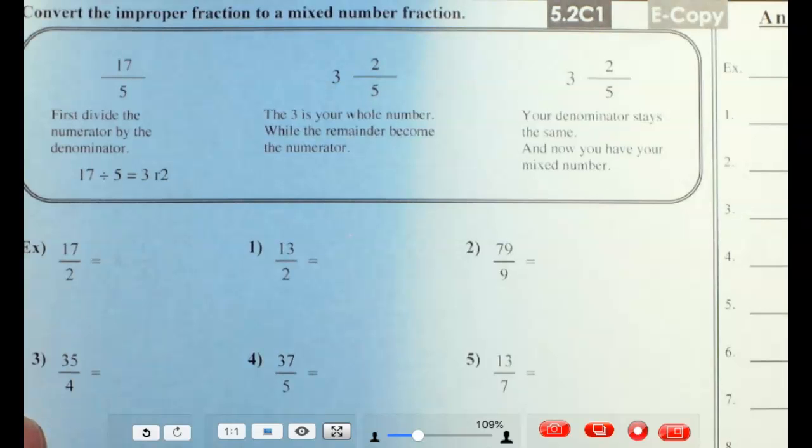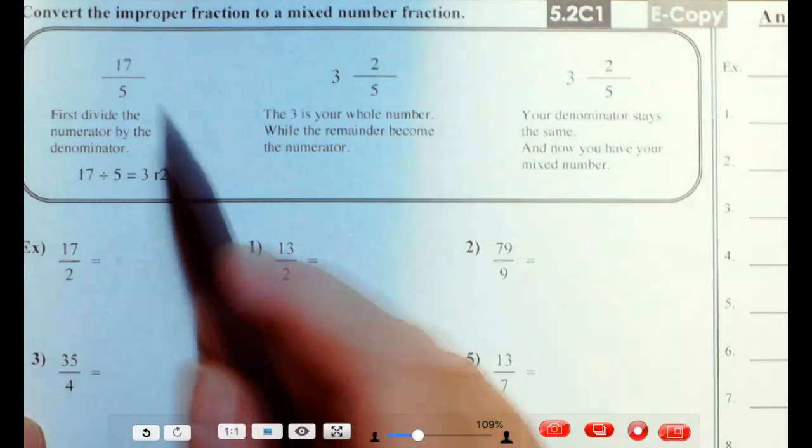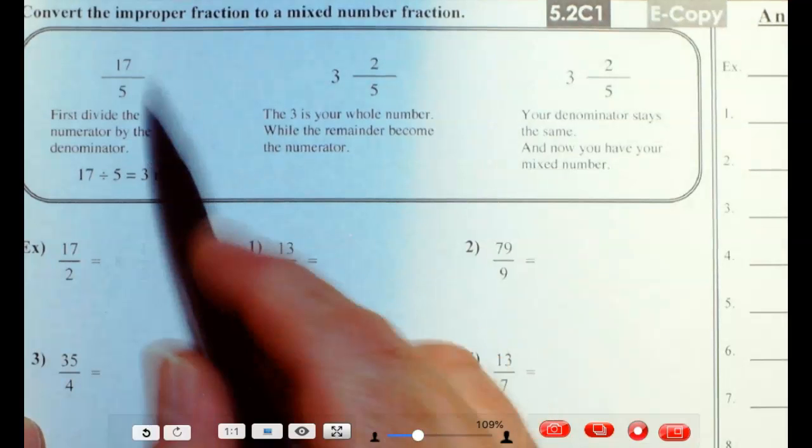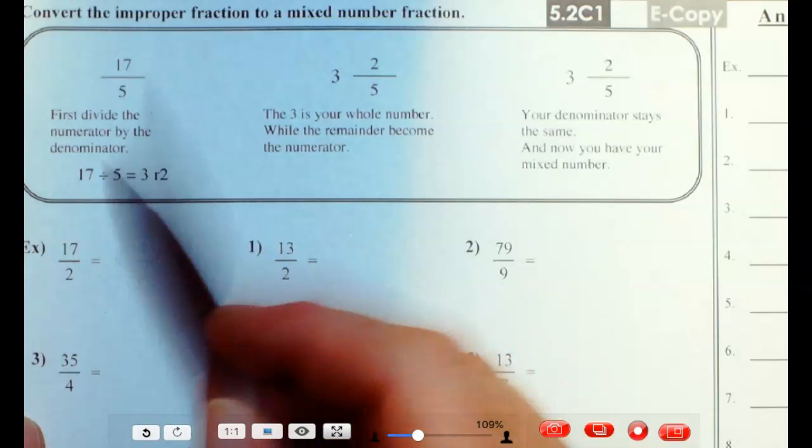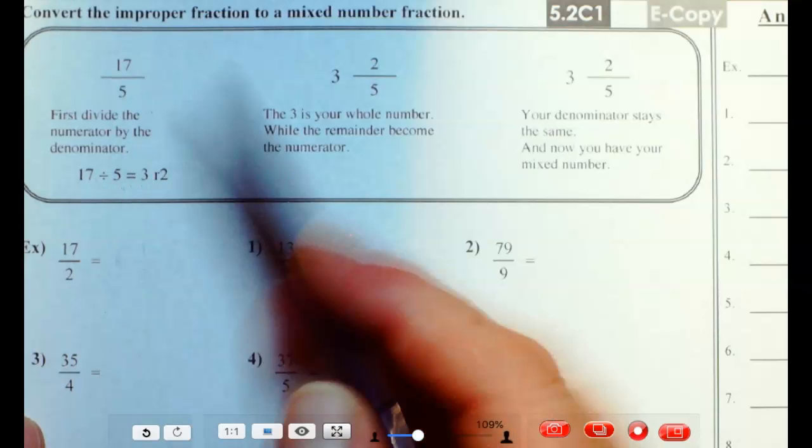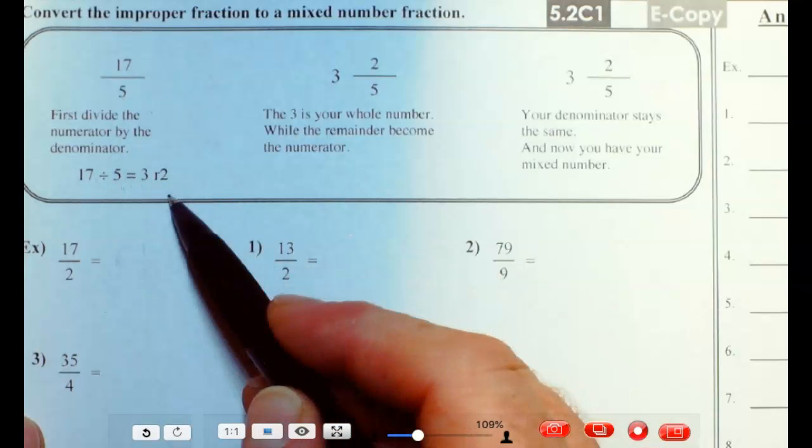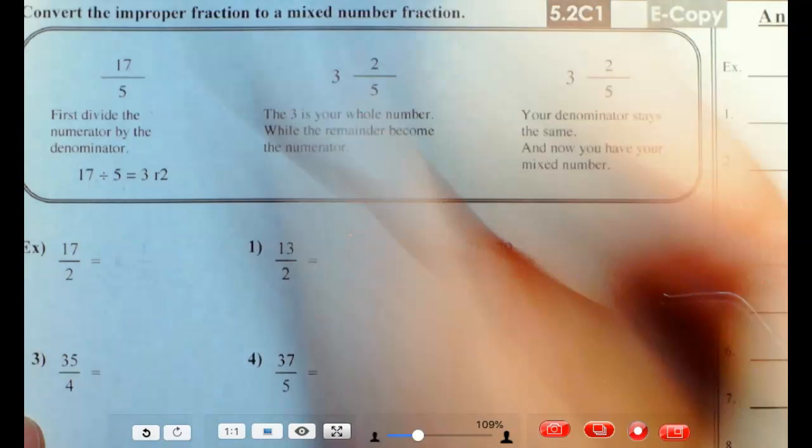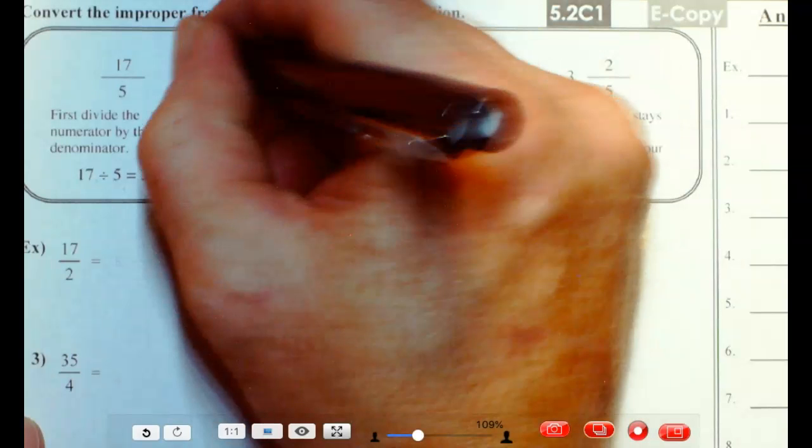Let's just go take a look at these. We have 17 fifths, which is really the same as 17 divided by 5. So if you were to divide that out, 17 divided by 5 is 3 remainder 2. And if you're not sure quite how to do that,